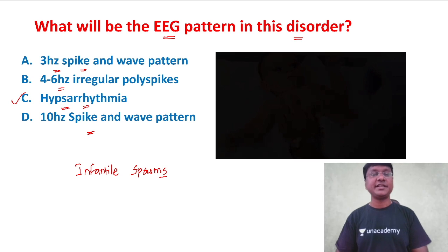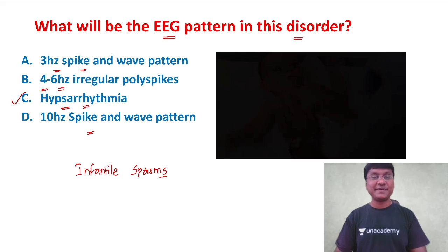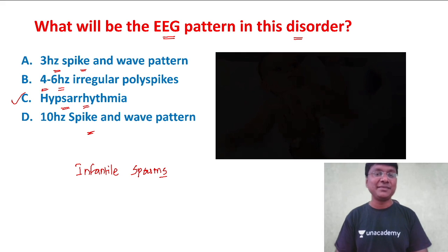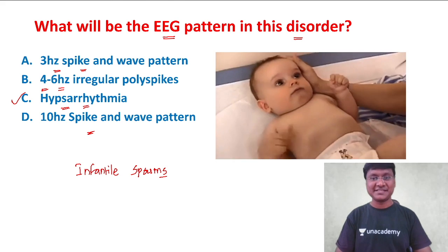Three hertz spike and wave pattern is seen in absence seizures. Four to six hertz irregular poly spikes are seen in juvenile myoclonic epilepsy. Let me just show you the image of the hypsarrhythmia.